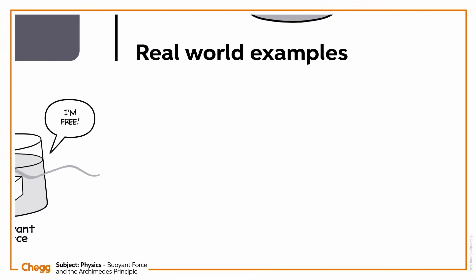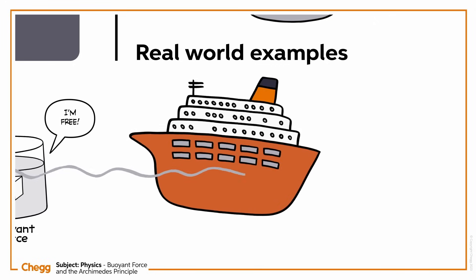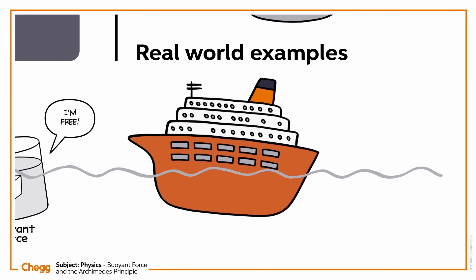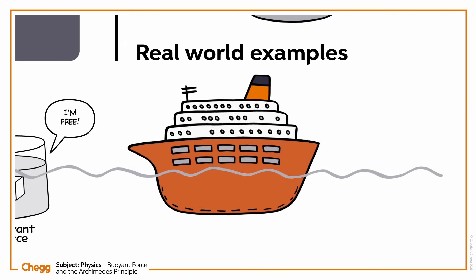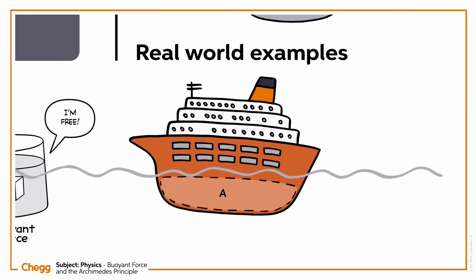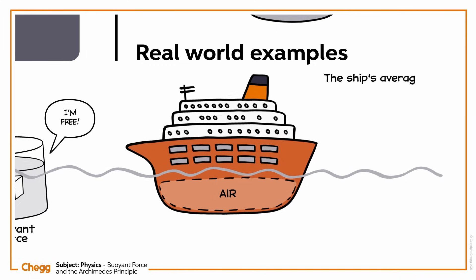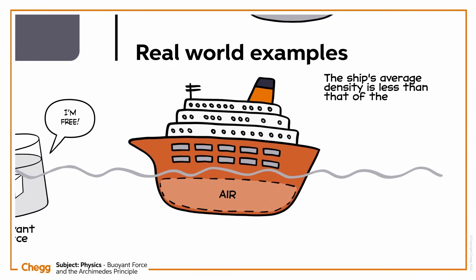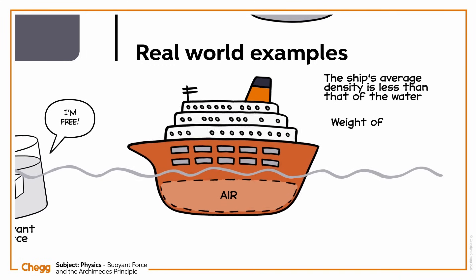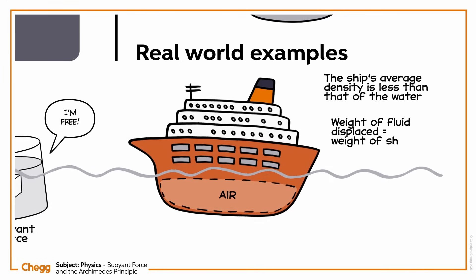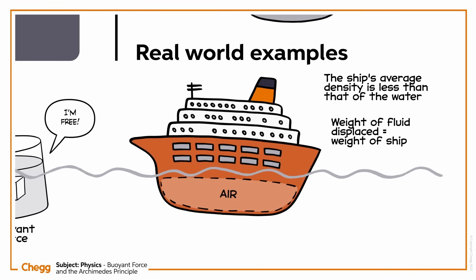As we asked at the beginning, how can a giant, heavy ship float in the sea? Well, usually a ship has a hollow space at its bottom, mainly filled with air, so the ship's average density is less than that of the water. The ship can displace water enough to equal the ship's weight, and so the ship can float on the sea.